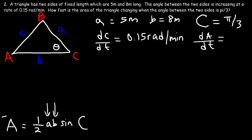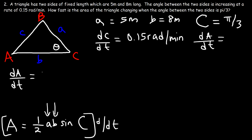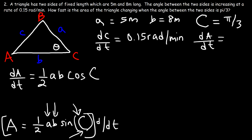Let's differentiate this equation with respect to time. The derivative of area is dA/dt. By the constant multiple rule, A and B are constants, so we can rewrite one-half AB. Then C is the variable — the derivative of sine C is cosine C, and by the chain rule, the derivative of C is dC/dt. So dA/dt equals one-half AB cosine(C) times dC/dt.